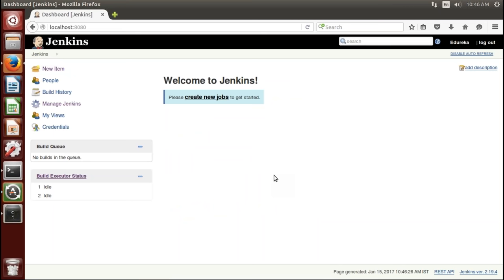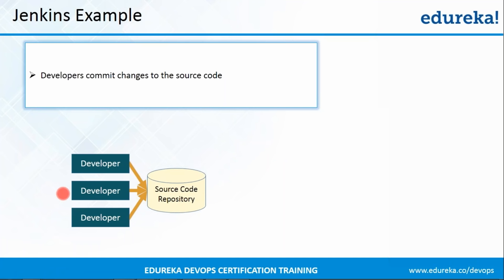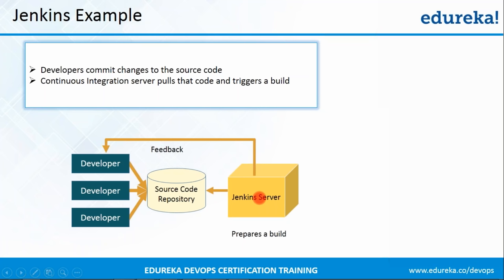Now we've understood what Jenkins is and seen various Jenkins plugins. It's time to understand Jenkins with an example — we'll see a general workflow of how Jenkins can be used. Developers are committing changes to the source code present in a shared repository — it can be a Git repository, Subversion repository, or any other. There's a Jenkins server which is actually polling the source code repository at regular intervals to see if any developer has made any commit. If there is a change, it will pull the code, prepare a build, and at the same time developers will be notified about the build results.